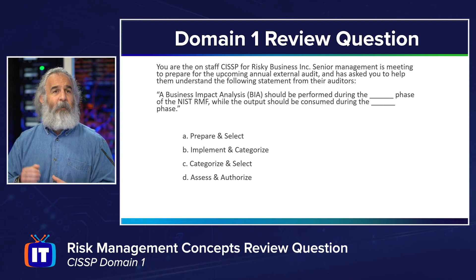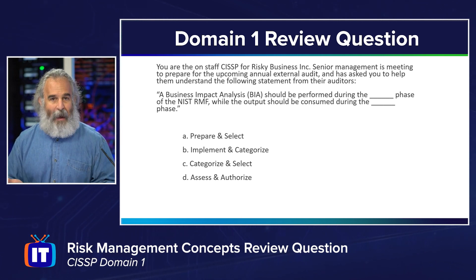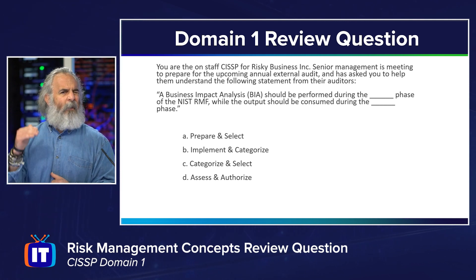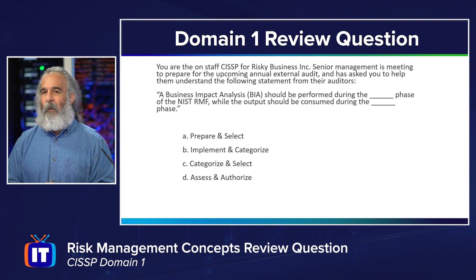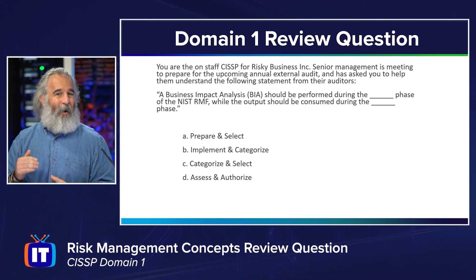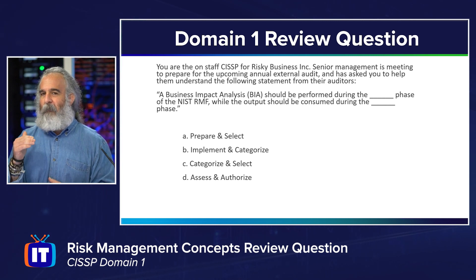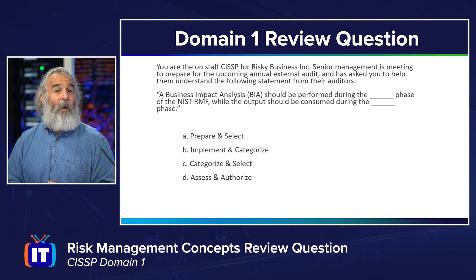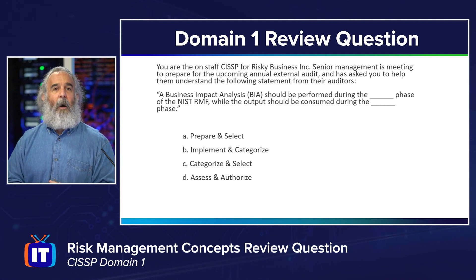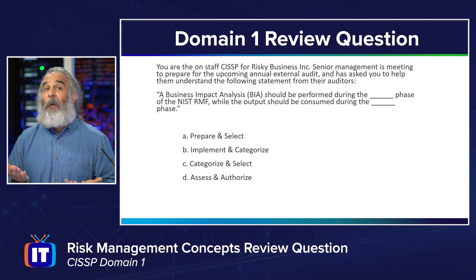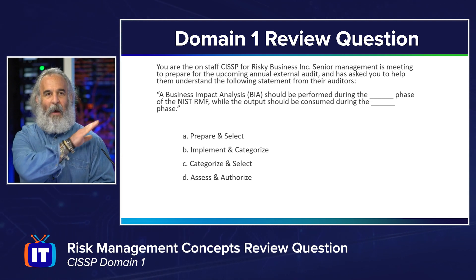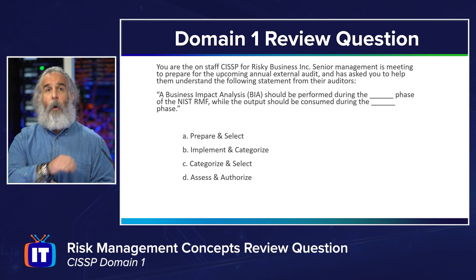The statement is as follows: 'A business impact analysis, the BIA, should be performed during the blank phase of the NIST RMF, while the output should be consumed during the blank phase.' So we've got essentially a fill-in-the-blank, and we deal with it by knowing the terms in the right order. I'm thinking in my mind: there are seven steps, I start with prepare and end with continuous monitoring. We've got four answer pairs, and we must select the right phase in both the first and second position.